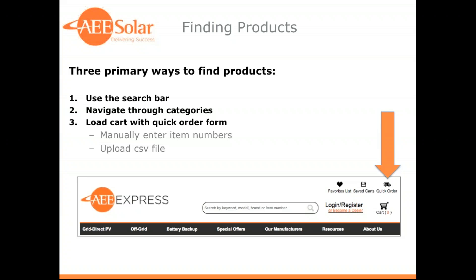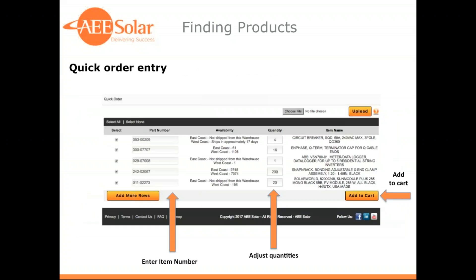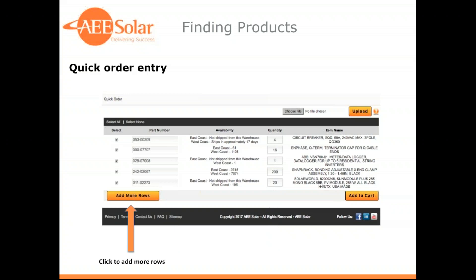To use the tool, you just click on the quick order icon on the top right corner of the header. Once in the tool, you enter the AE item number and the quantity of the item you'd like to purchase, and the availability and description will automatically populate after the part number and quantity is entered. You also need to check the select box on the left-hand side for each of those items. If you need more rows, just click the add more rows button, and once all items are showing and all select buttons are chosen, click to add it to your cart.